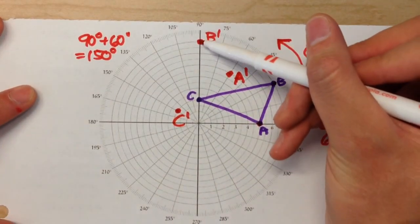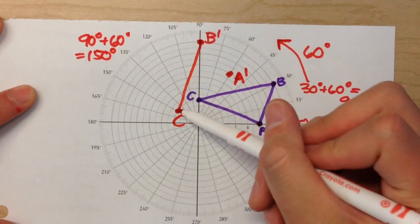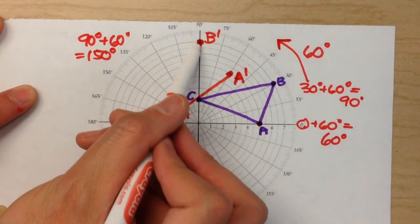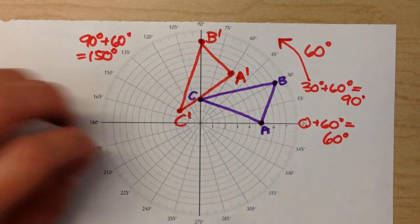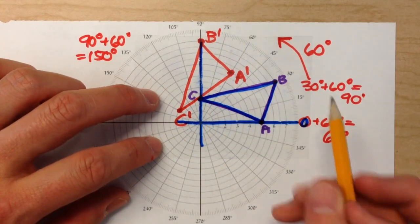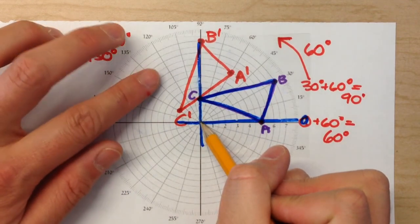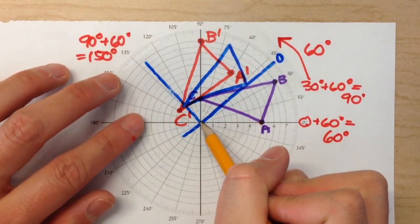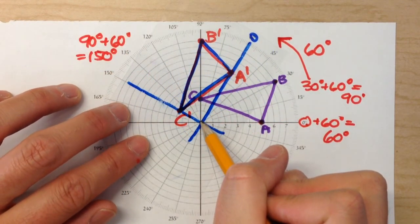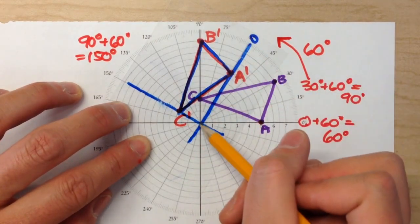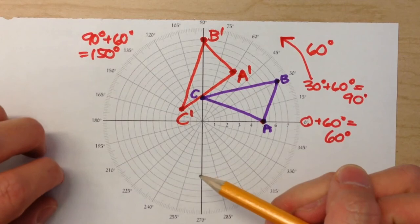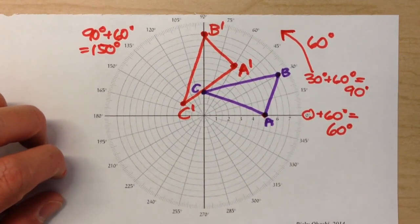Now when I connect the dots, that is my rotated triangle. And if I want to check it, I can because I still have my transparency. Rotate this 60 degrees. Bam. Look, ends up right on top of the triangle I just drew. So that's rotating on a polar coordinate grid.